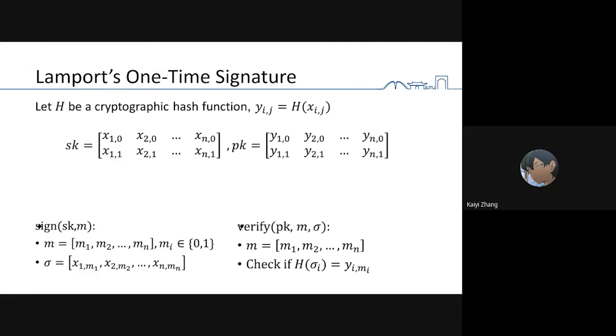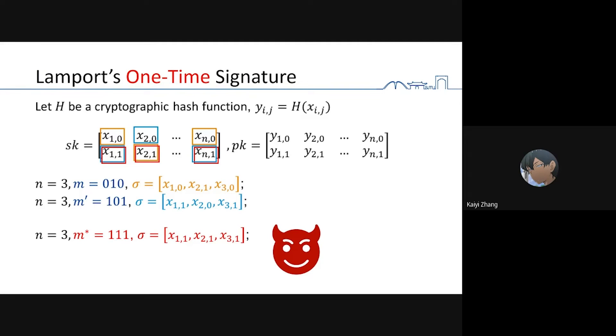To verify a message, we first check the signature, the hash of the signature against Y. For example, if I want to sign a message 0, 1, 0, I will release those three X. One-time signature can only sign one message. If the signer signs multiple messages, it is no longer secure.